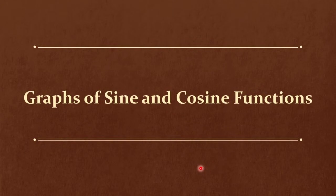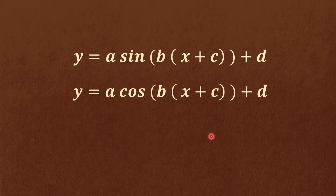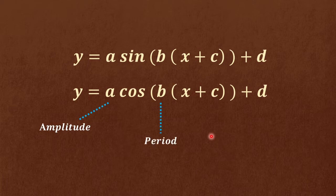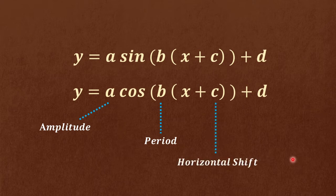In this video, we're going to show how to sketch the graphs of sine and cosine functions. We're going to follow this format: A gives us the amplitude, B is used to get the period, C is for the horizontal shift, and D for the vertical shift.